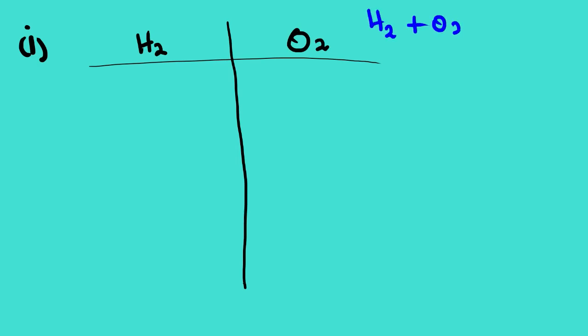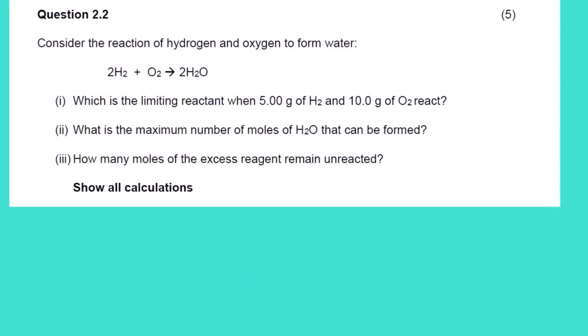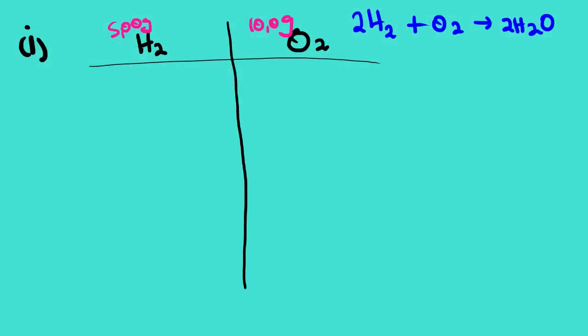We have a balanced equation: 2H₂ + O₂ → 2H₂O. We can verify this is balanced — we have 4 hydrogens and 2 oxygens on each side. We have 5 grams of hydrogen and 10 grams of oxygen given.